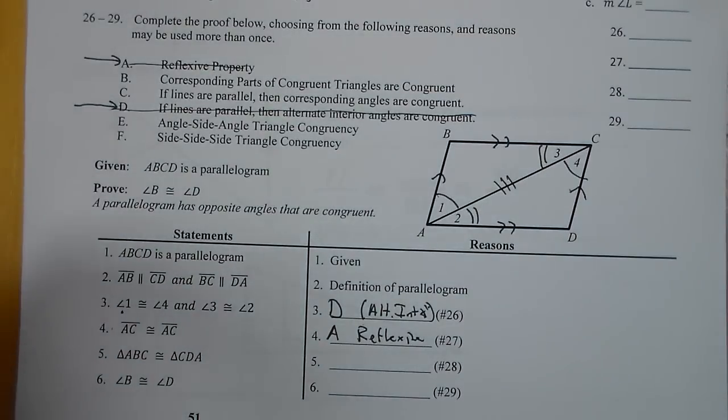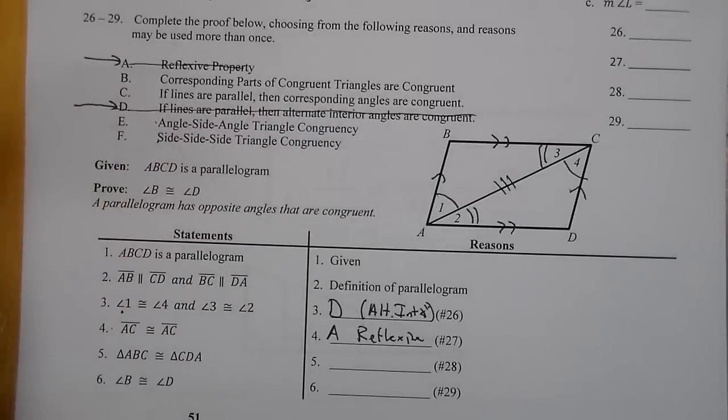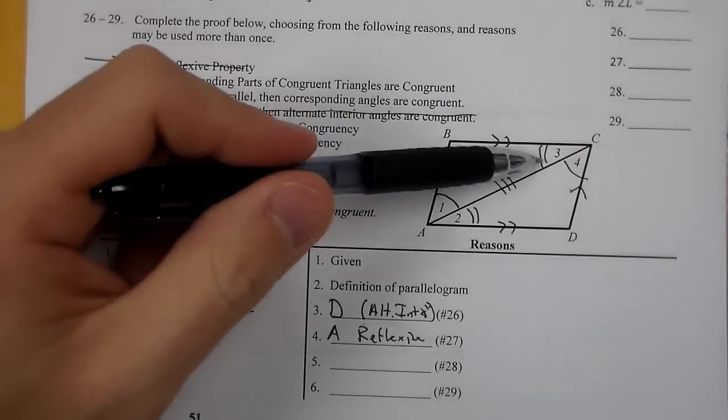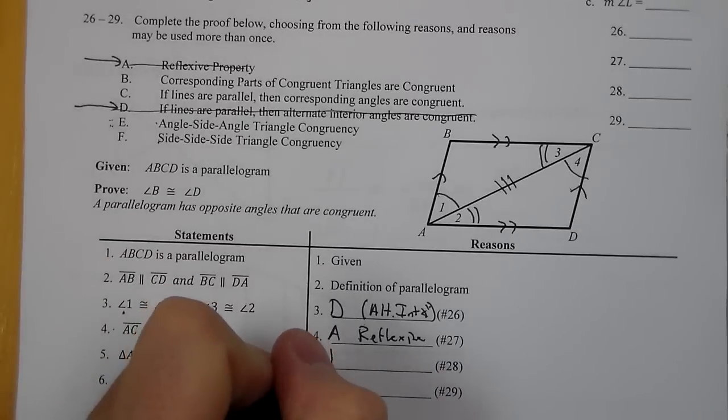Now our two triangles are congruent. If our two triangles are congruent, I'm looking for the triangle congruence reasons, which is angle, side, angle and side, side, side. We look at our picture. I have two sets of angles and the side in between, which makes me think angle, side, angle.